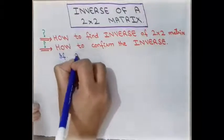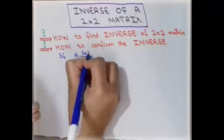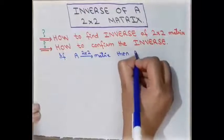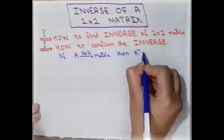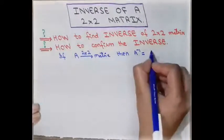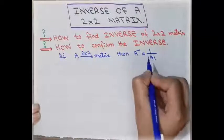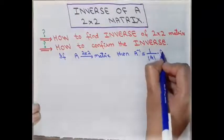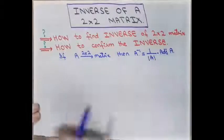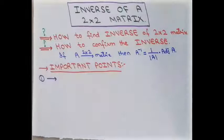If we have a matrix A of order 2×2, then we have to calculate A inverse. The formula to calculate the inverse of such a matrix is: 1 divided by the determinant of the matrix, multiplied by the adjoint of matrix A. This is the formula to calculate the inverse.